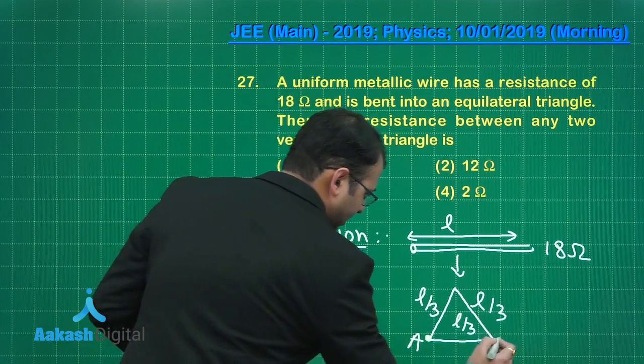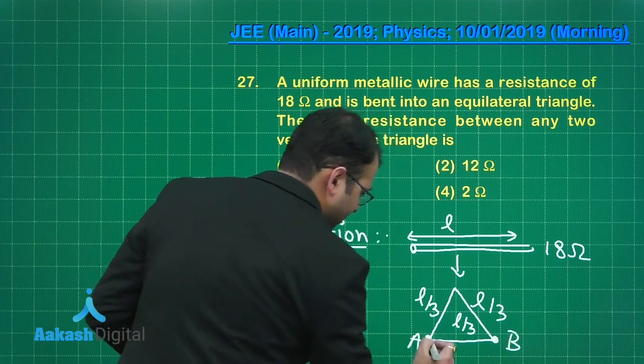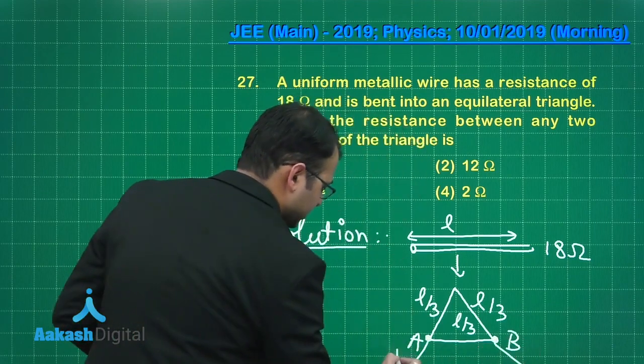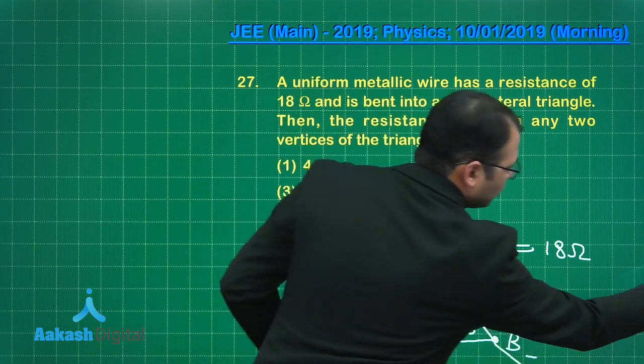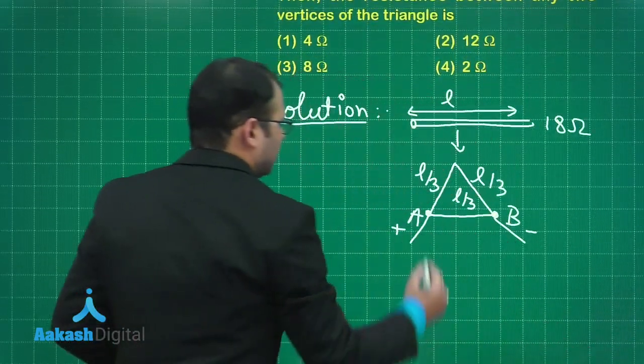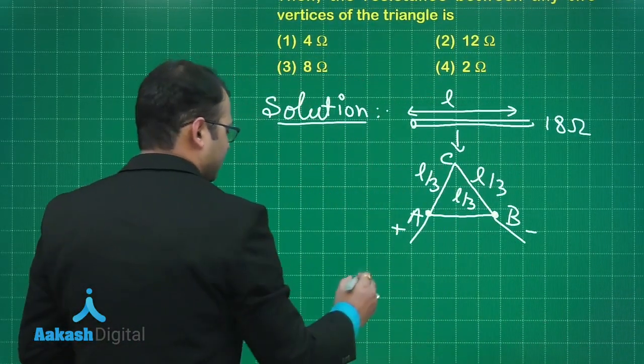Let's take this as A and this as B. This is the plus point and this is the minus point. So resistance of every segment, let's take this as C as well.